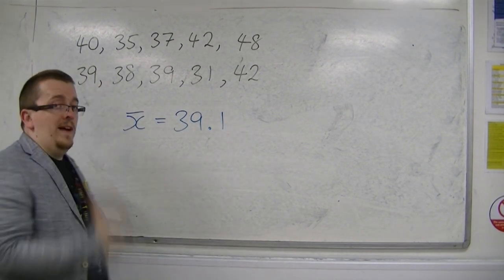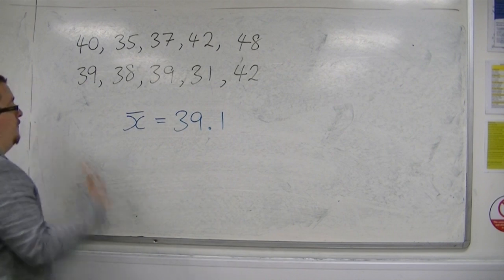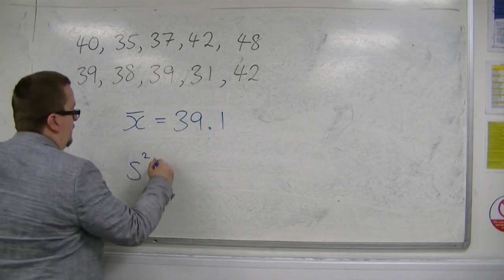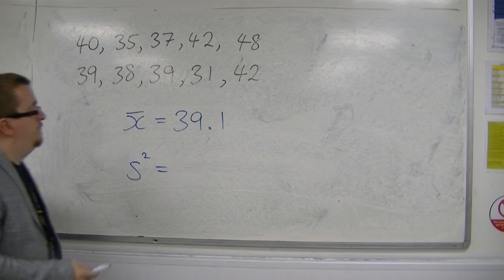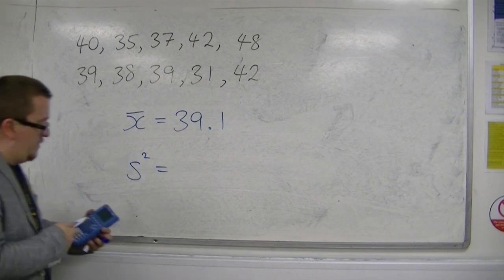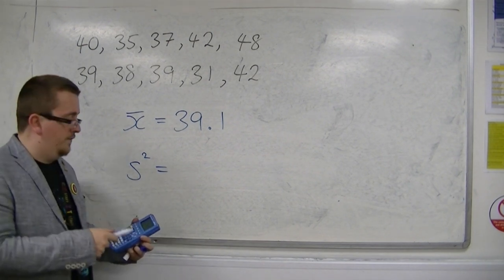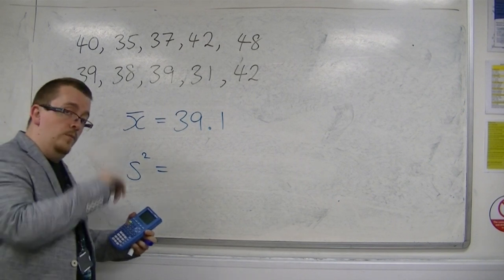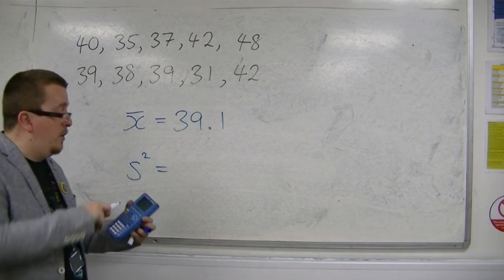As for the variance, the unbiased estimator for the population variance is also given to us in the same calculation. I'm going to show you where this is on the calculator in a moment.